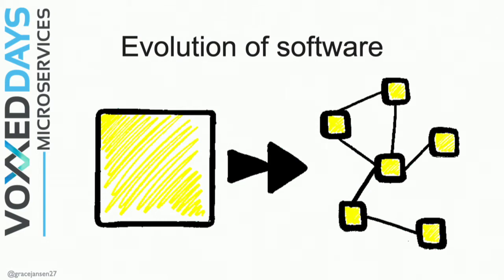The evolution of software: we've gone from monolithic applications to microservices, which was a great step forward. Those monolithic applications were getting so large they became huge monstrous things that were hard to debug and hard to introduce new features to. Moving to a microservice architecture made a lot of sense and enabled a lot of benefits. But there are still issues around being able to respond to load changes, having applications that react instantaneously, and being able to have elastic resource allocation for the most efficient use of resources.